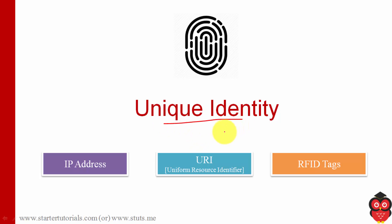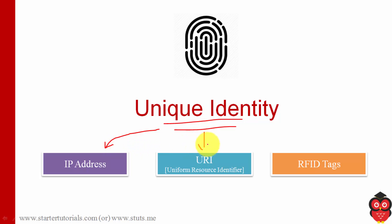The next characteristic is unique identity. Within the definition of IoT, all devices will have a unique identity so that it is easy to manage them. There are three ways of uniquely identifying devices: by using the IP address, by using a Uniform Resource Identifier (URI), or by using RFID tags.